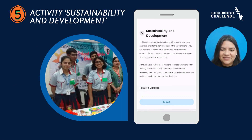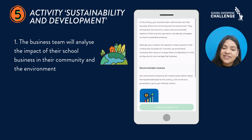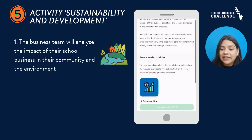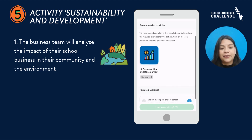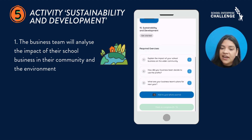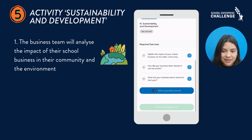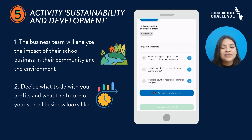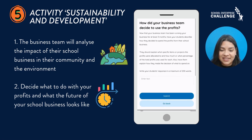Activity 5: Sustainability and Development. During this activity, students will examine the effects their business has on the community and environment. They will have to consider economic, social, and environmental factors, identifying strategies to ensure their business operates sustainably. You will also have to decide as a team what to do with your profits and what the future of your business entails.